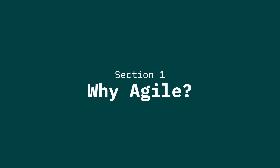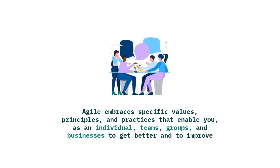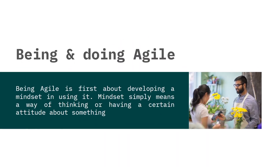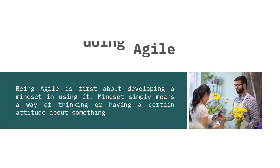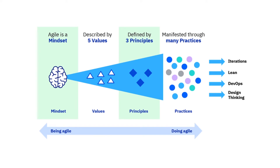Section 1 of this video will be an introduction to what Agile is. Agile embraces specific values, principles and practices that enable you as an individual, teams, groups and businesses to get better and to improve. To get better, teams need to change the way they work — they need to change the culture of how they work. Being Agile is first about developing a mindset. An Agile mindset is described by five values and is defined by three principles. The act of migrating from being Agile to doing Agile is about integrating these values and principles into how work is done through practice.